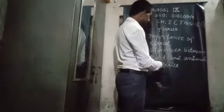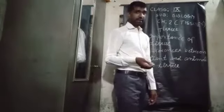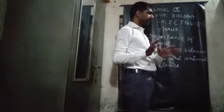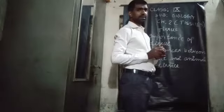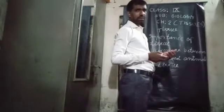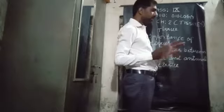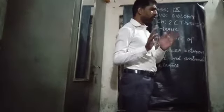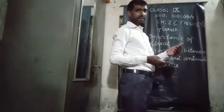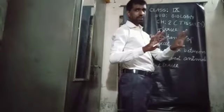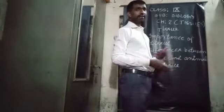Now I am going to describe the differences between plant and animal tissue. Plants are autotrophic organisms — they prepare their food by the process of photosynthesis. Animals, on the other hand, are heterotrophic organisms. They cannot synthesize their own food. They are heterotrophic in nature and depend on plants and other organisms directly or indirectly for food.